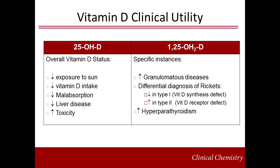25-hydroxyvitamin D is the best molecule to measure for assessment of overall vitamin D status. It is decreased with low exposure to sunlight, inadequate dietary intake, malabsorption, and liver disease. It is increased with toxicity, which occurs exclusively through dietary intake such as oversupplementation. Prolonged exposure to sunlight does not cause toxicity as the excess is converted into inactive compounds such as 24-25 vitamin D. As far as test utilization, while supplementation has a clear role in several disorders such as bone disease, there is little clinical evidence demonstrating that actually measuring vitamin D improves clinical outcomes. This is a topic of active research.